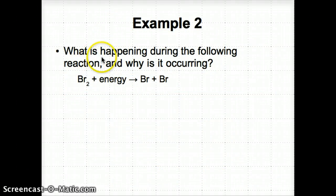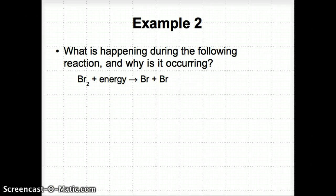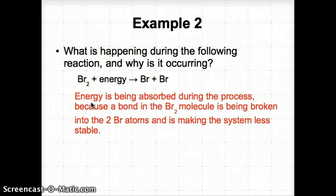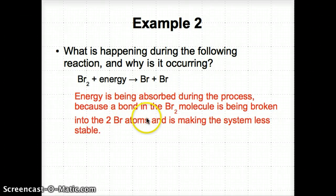This next example asks us to explain what happens during the reaction of Br2 and energy to produce two separate Br atoms, and why. Energy is absorbed during the reaction because the bond in the Br2 molecule is broken apart into two separate Br atoms, making the system less stable. Think of Romeo and Juliet as a couple — it takes energy to break them apart, and when separated, they become hyper and crazy as a result.